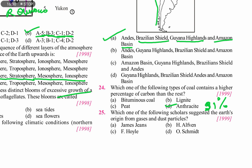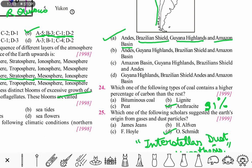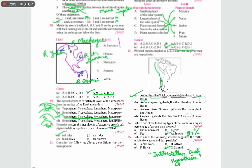Question 25, the last question: which scholar suggested the earth's origin from gases and dust particles? This theory is the interstellar dust hypothesis. It states that the earth originated from gases and dust particles, and relates to the origin of the earth and the solar system.